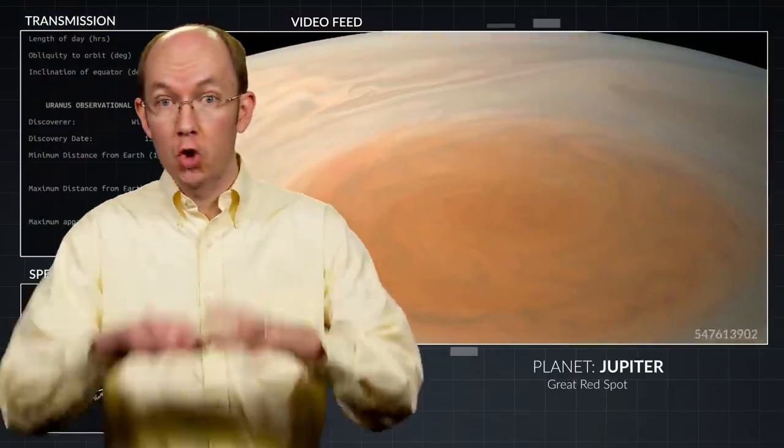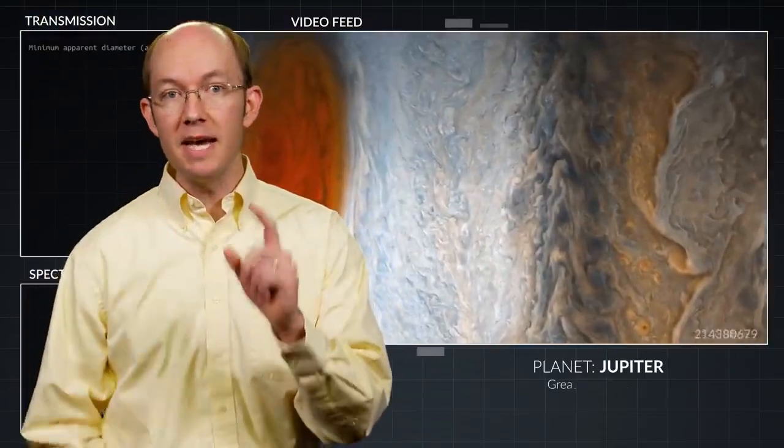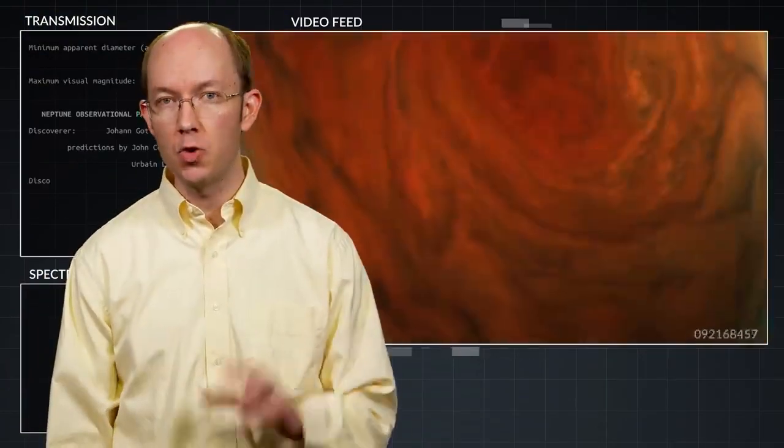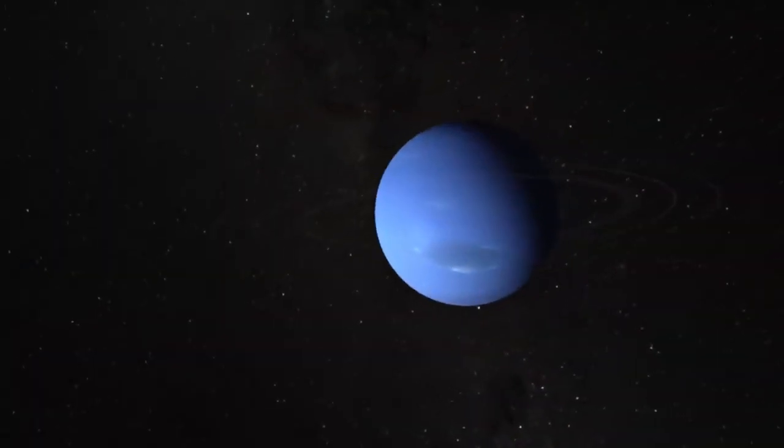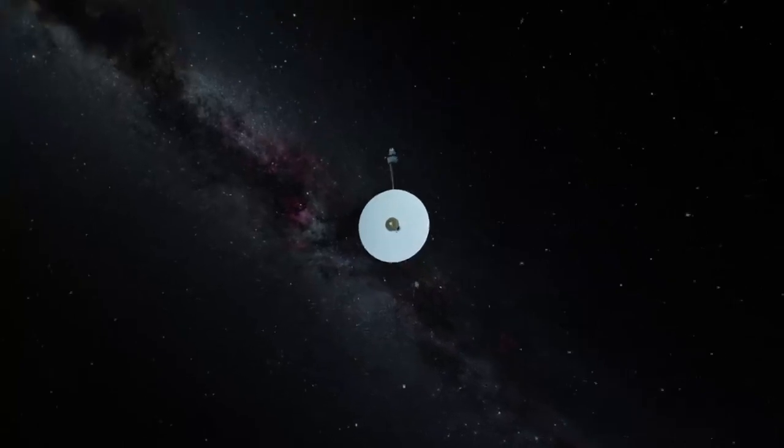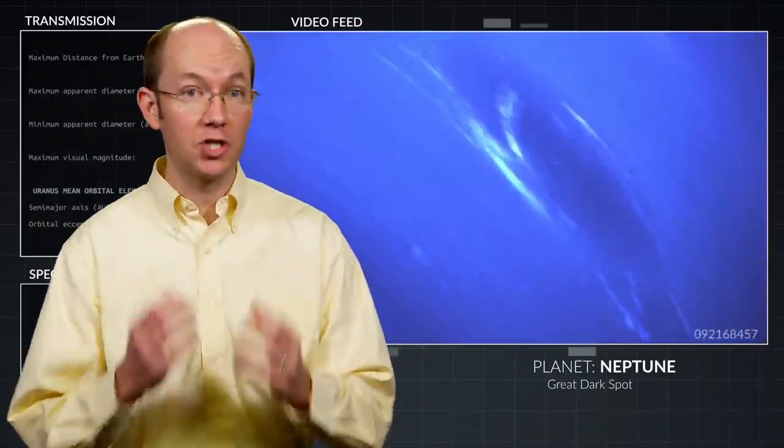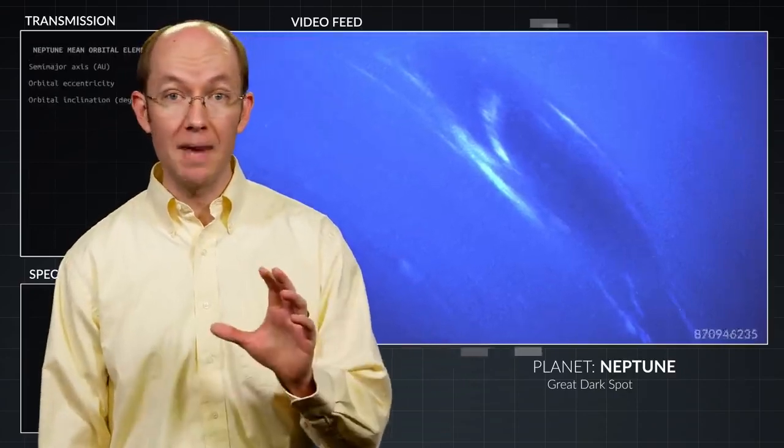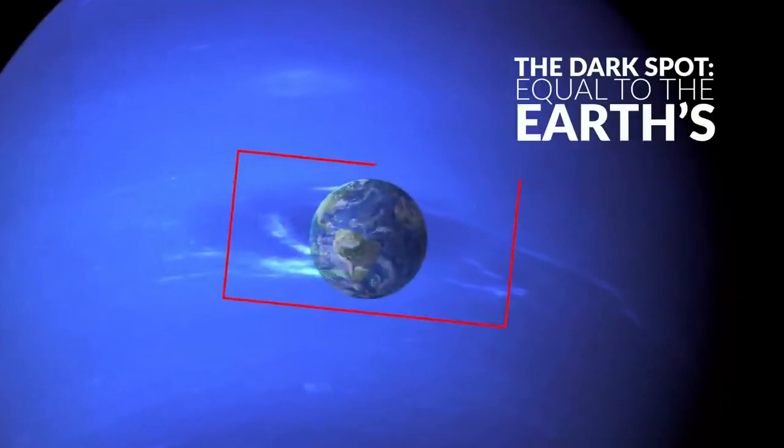Like Jupiter with its Great Red Spot, Neptune also has been observed to host a giant storm. One such storm, observed by the Voyager 2 space probe in 1982, was named the Great Dark Spot. This storm had a size equal to Earth's diameter.